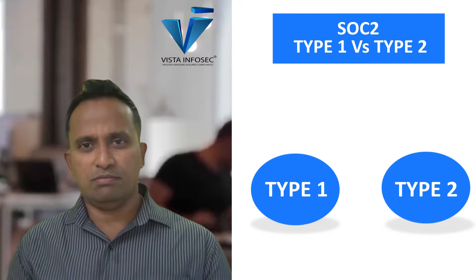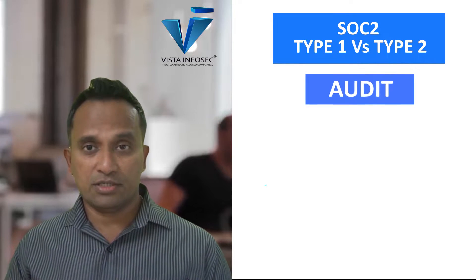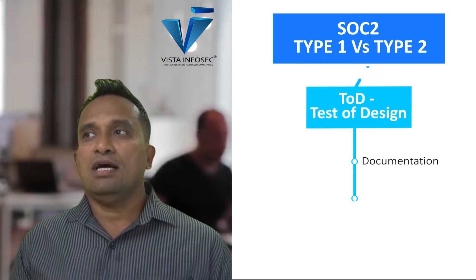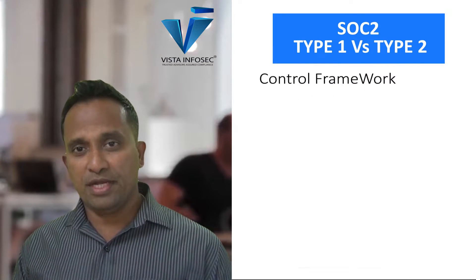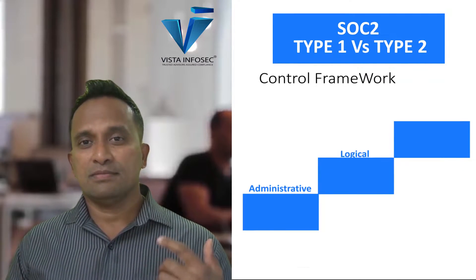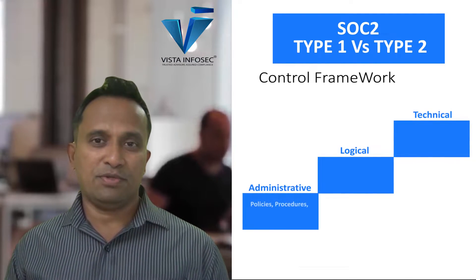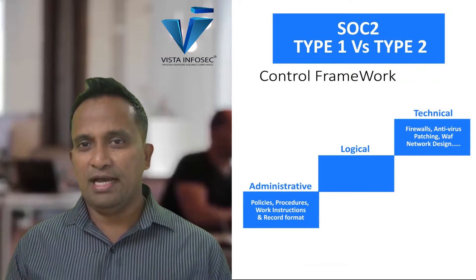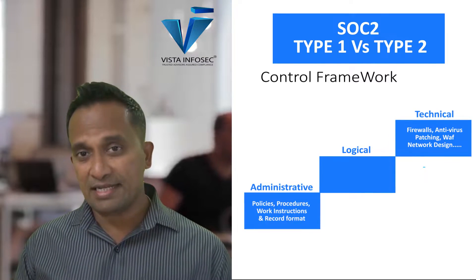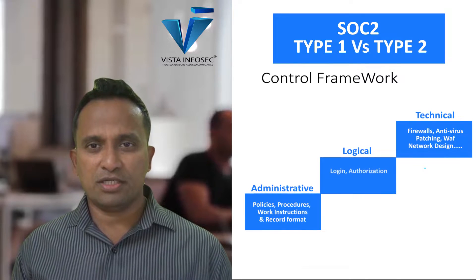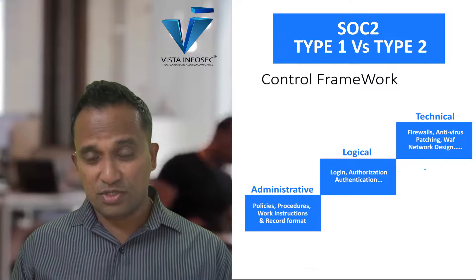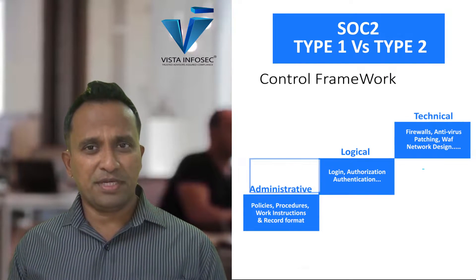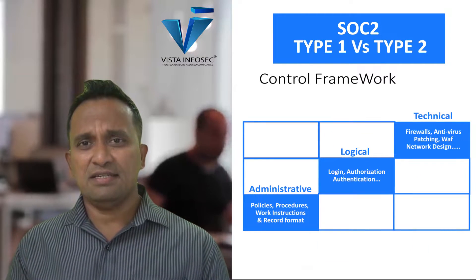Most of you would have heard what an ISMS or ISO audit is about. There are two levels to the audit. Stage 1 is where the auditor checks all your documentation and your control framework. A control framework operates at three levels: administrative, logical, and technical. Administrative covers policies, procedures, work instructions, and record formats. Technical covers firewalls, antivirus, patching, WAF, and network design. Logical covers how you control access via authentication and authorization. The auditor also checks the type of controls — corrective, preventive, or detective — forming a three-by-three matrix of your control design framework.